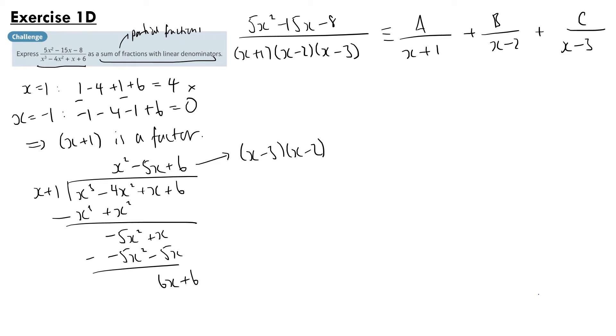We multiply both sides by x plus 1, x minus 2, x minus 3. We get 5x squared minus 15x minus 8 is equivalent to a times x minus 2 times x minus 3, plus b times x plus 1 times x minus 3, plus c times x plus 1 times x minus 2.